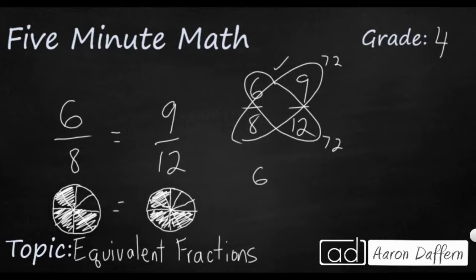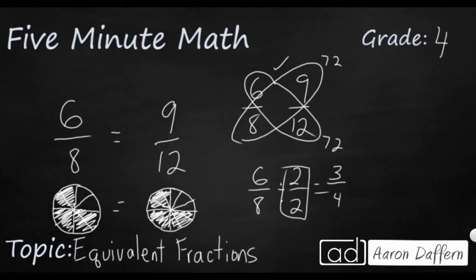Let me also simplify both fractions to confirm. Six-eighths divided by two over two gives three-fourths. Now nine-twelfths — dividing by three over three — also gives three-fourths. Both fractions simplify to three-fourths, confirming they are equivalent.